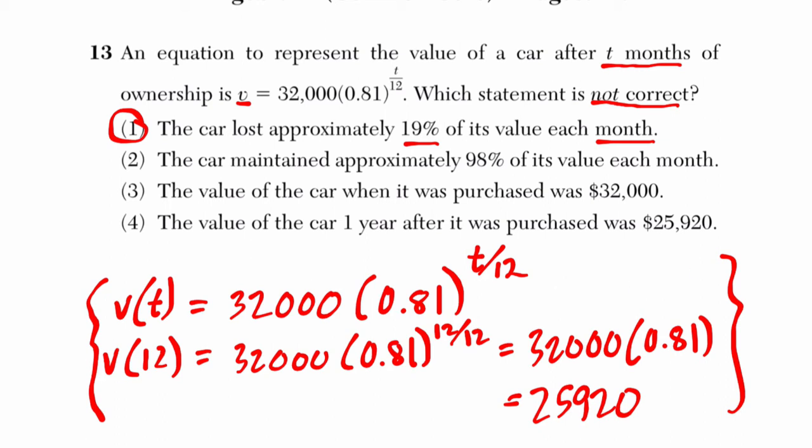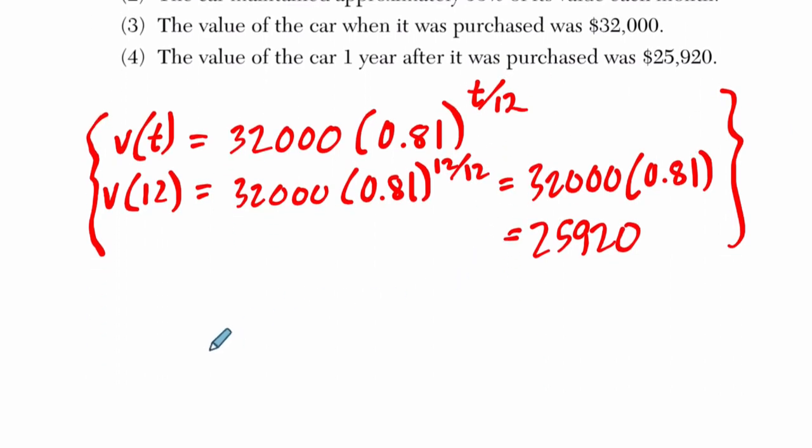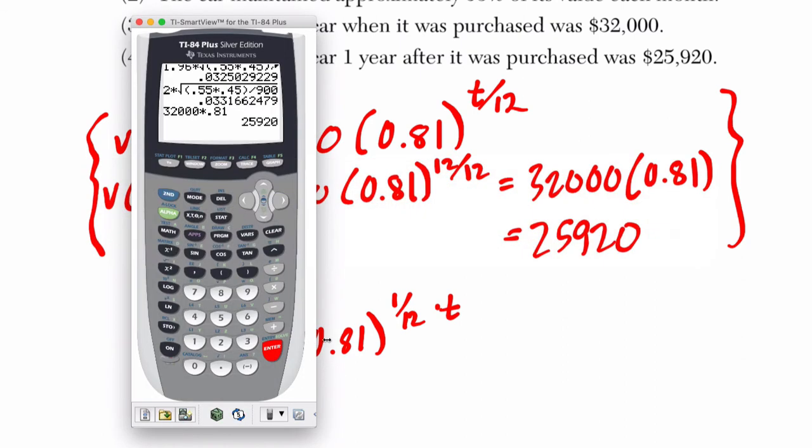If they ask you, what would happen each month, you would just simplify this. So you would say 32,000 times 0.81 to the 1 twelfth times t. This is the same thing, I just split apart t over 12, that's 1 twelfth of t. And then I can take the 12th root of 0.81 to see what would actually happen each month.